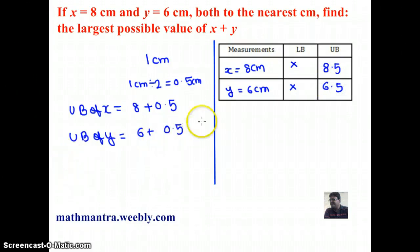The largest possible value of x plus y will be the sum of the upper bounds here. So, 8.5 plus 6.5 and that will be 15 centimeters.